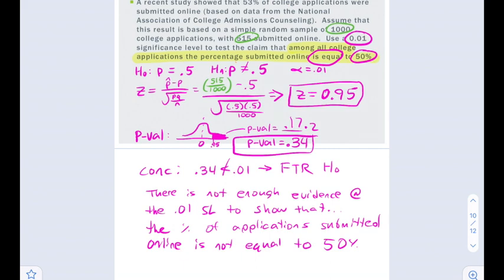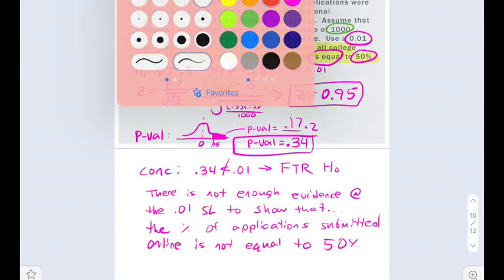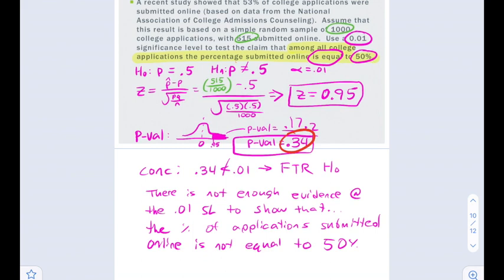The proportion of all college applications submitted online is not equal to 50%. So my final conclusion says that there's not enough evidence at the 0.01 significance level to show that the percentage of applications submitted online is not equal to 50%. Honestly, our p-value of 0.34 is pretty far away from the significance level of 0.01, and we already had a large sample size of a thousand, so it would be pretty hard to prove that the percentage is not 50%.